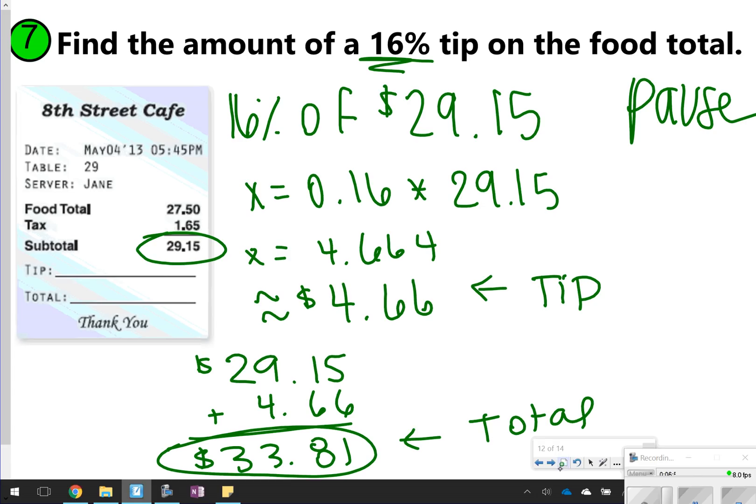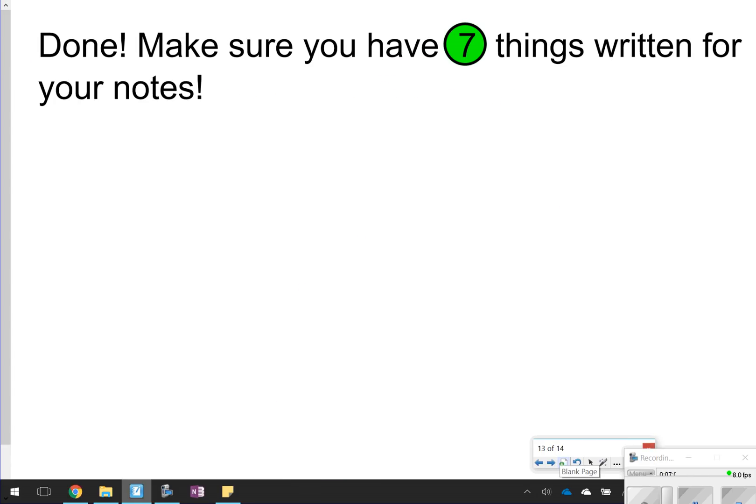Okay, that's going to conclude our notes for today. Thanks so much for tuning in. Make sure you have those seven things written down, and make sure that you understand that the percent proportion is A is equal to P times W, where the percent is written as a decimal. We'll catch you next time.